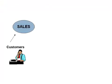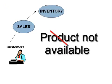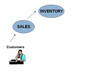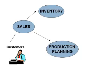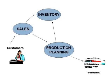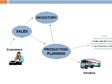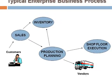A client approaches the sales team to buy a particular product. The sales team approaches the inventory department to check the availability of the product. In this case, the product is out of stock. The sales team approaches the production planning department to manufacture the product. The production planning team checks with the inventory department for availability of raw material. If raw material is not available within the inventory, the production planning team buys the raw material from the vendors. Then production planning forwards the raw materials to the shop floor execution for actual production.